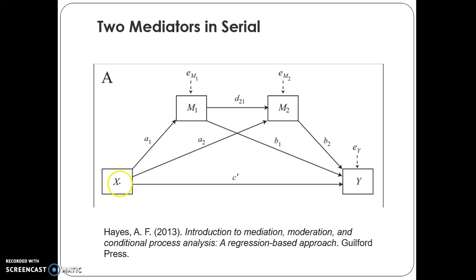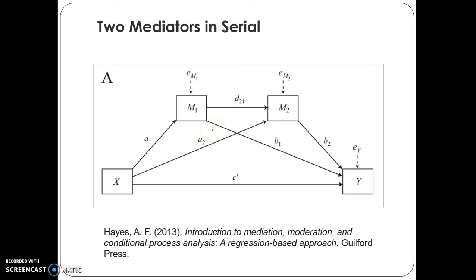Here X is an antecedent and Y is an outcome, and M1 and M2 are acting as serial mediators. X is affecting Y through M1 and M2. The values a1, a2, d21, b1, b2 are nothing but coefficient values. Here totally we have three paths between X and Y — path 1, path 2, and path 3. Because of that reason only we are calling this particular model as the three-path mediation model, or two mediators in serial, or simply serial multiple mediation.